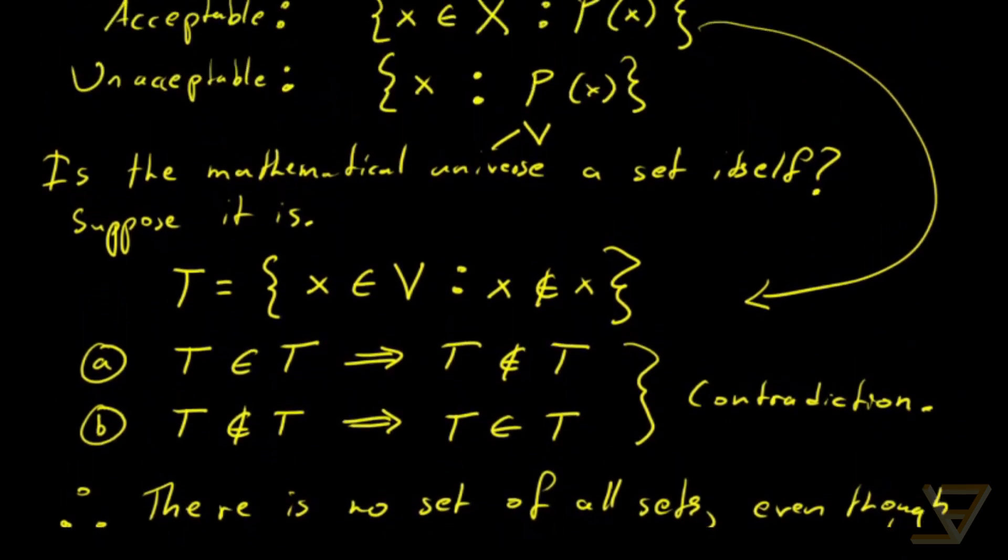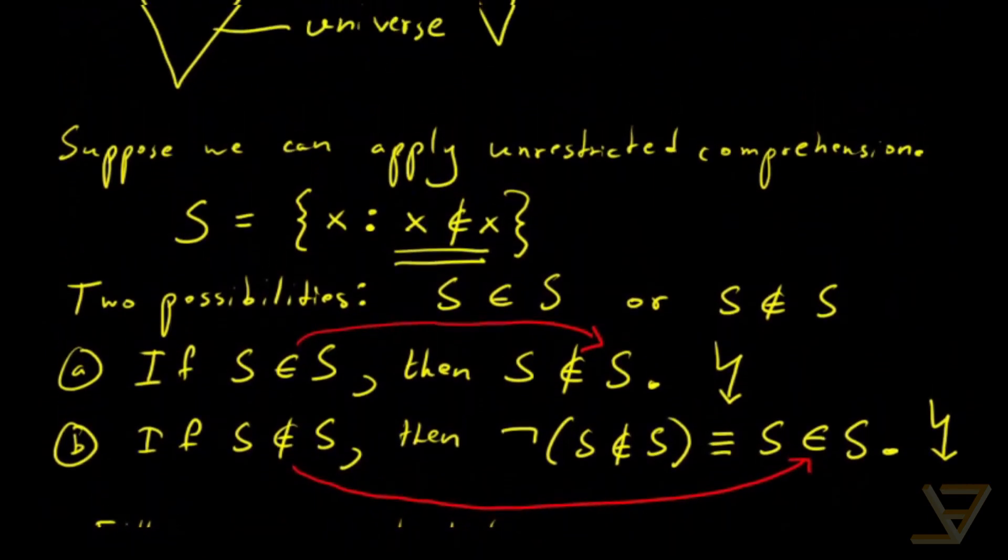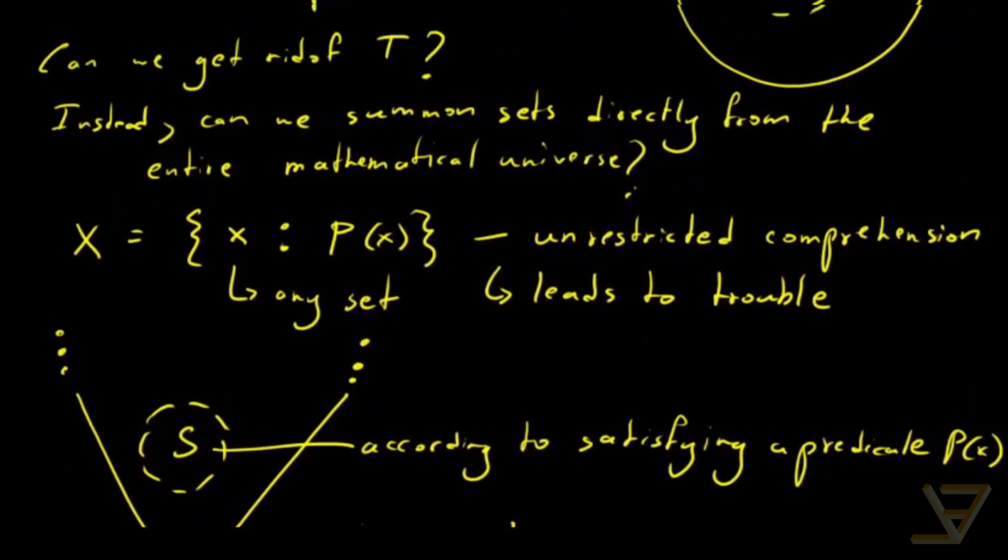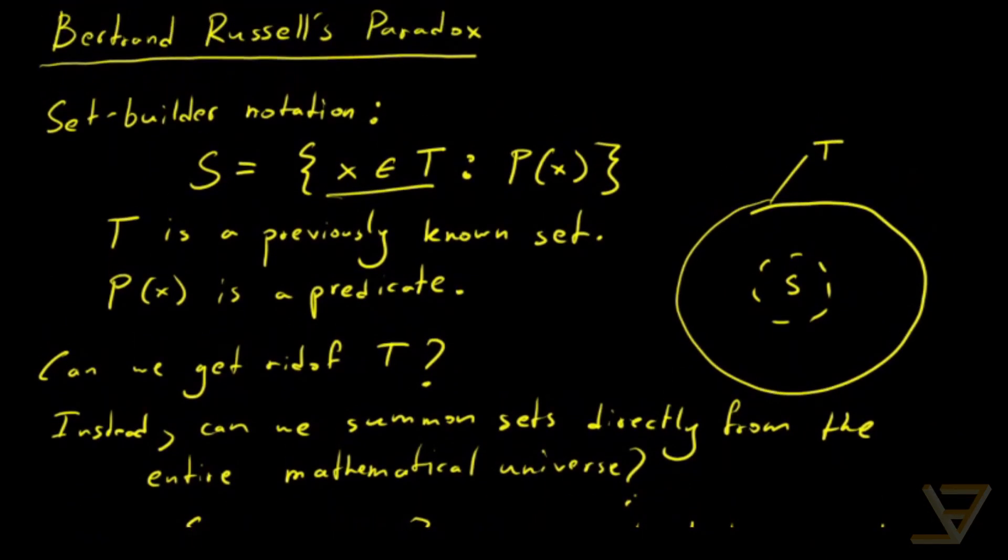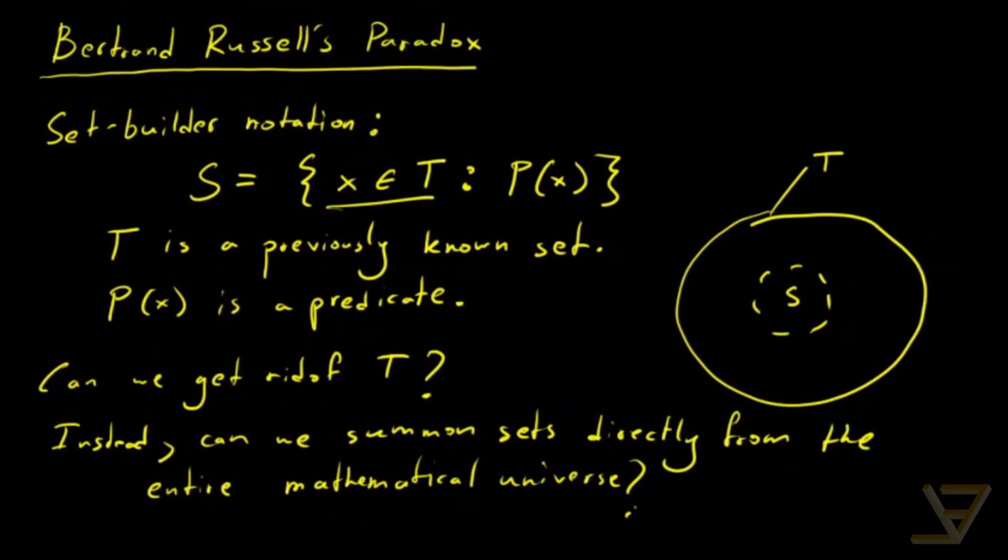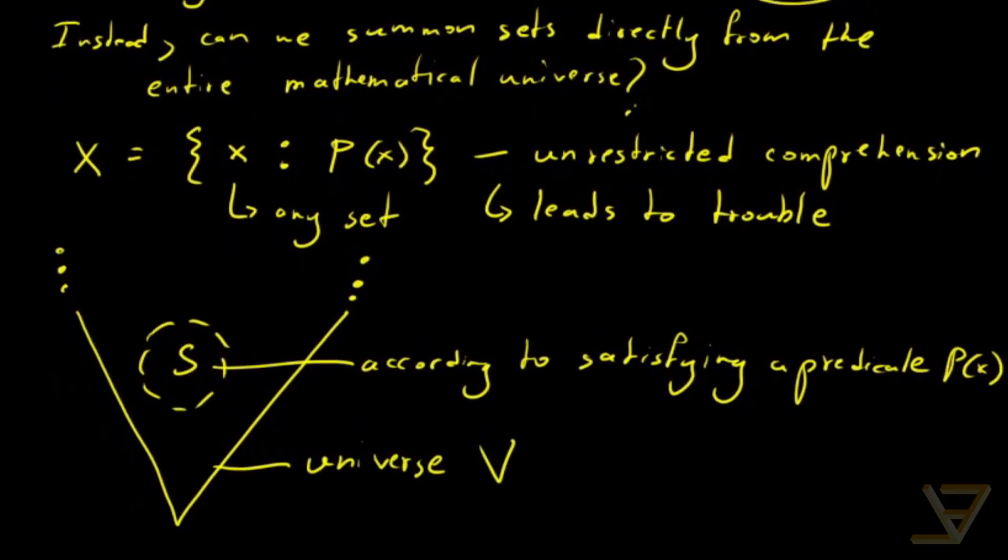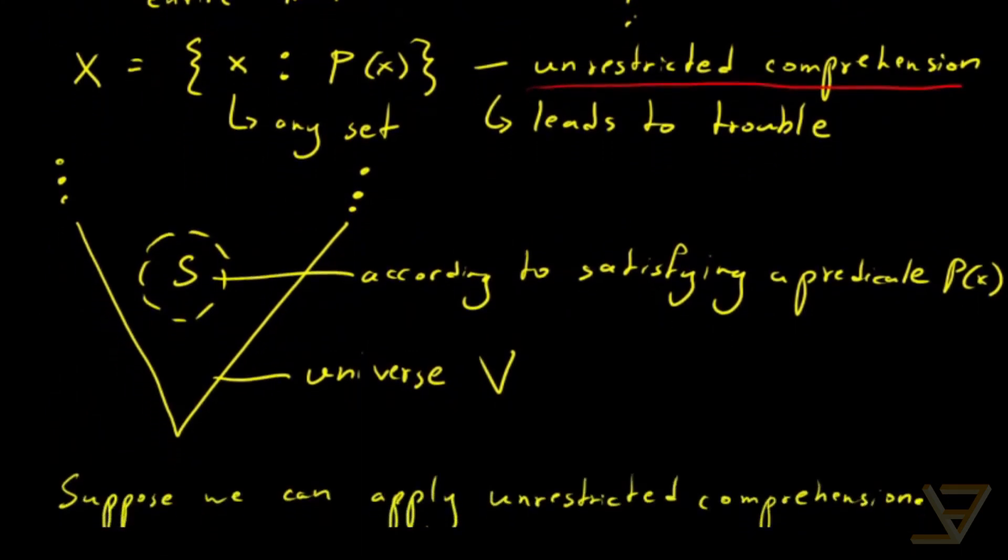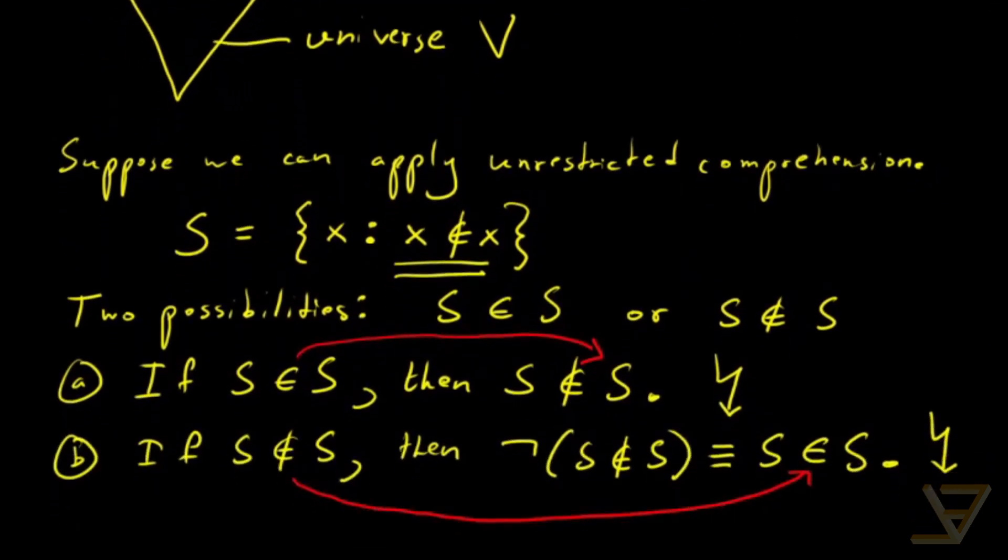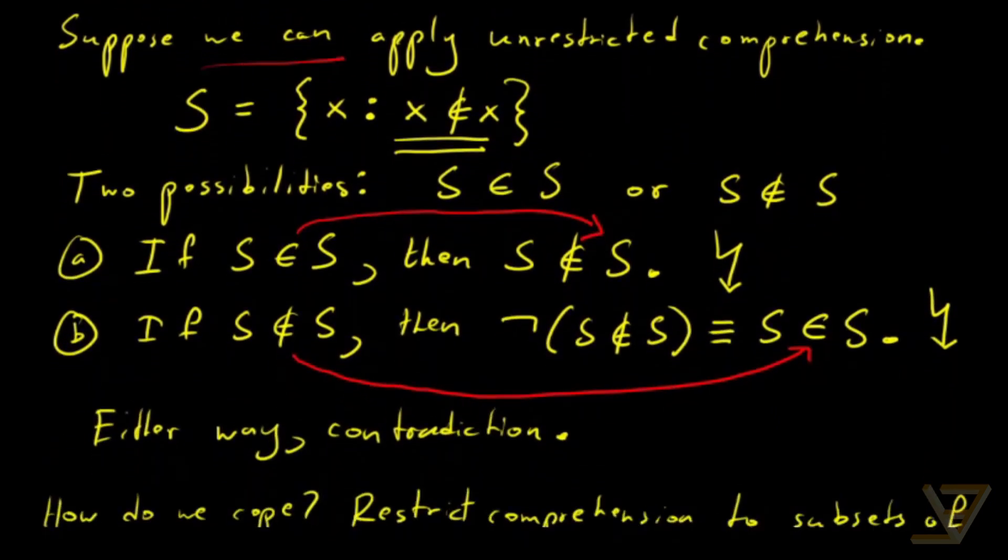Let's do a quick summary. Today we were talking about Bertrand Russell's paradox. We started by defining set builder notation, which allows us to construct sets. Then we wondered whether we can expand this concept to an idea called unrestricted comprehension. We assumed for a moment that we can apply unrestricted comprehension.